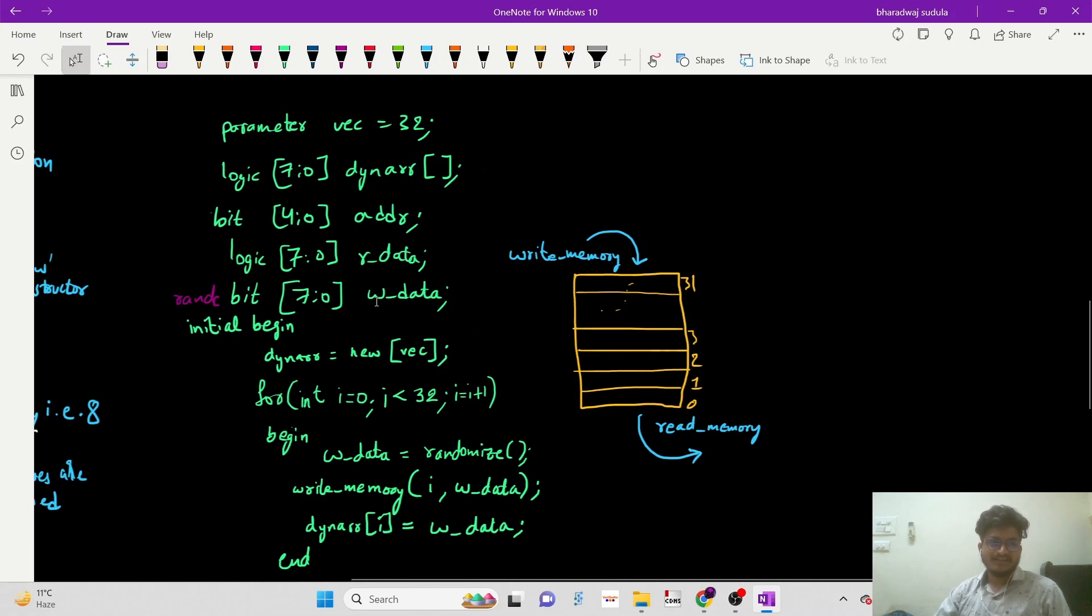Hello everyone, here is an example for dynamic arrays where we can write some data to it or read the data back. I have declared a vector of parameter which is 32-bit, and here we have